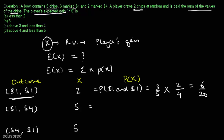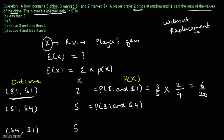Similarly, we find the probability that x equals five for the outcome where the first chip is marked one dollar and the second chip is marked four dollars. Again this is without replacement. The probability the first chip is one dollar is three divided by five, and after drawing one chip, two of the four remaining chips are marked four dollars. So this probability is also six divided by twenty.